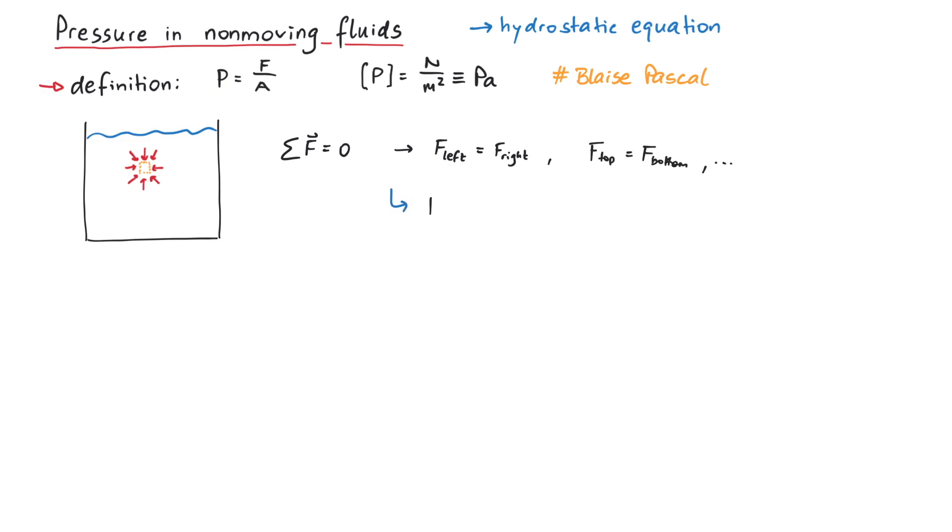And this also means that the pressure on the left and right sides of this infinitesimally small volume is the same. Therefore, pressure is a scalar quantity. It has no direction. This is the same as temperature. If you measure temperature at one point in a room, there is no direction if everything is in equilibrium.